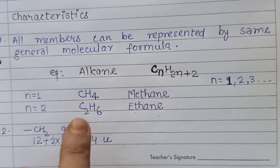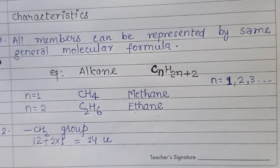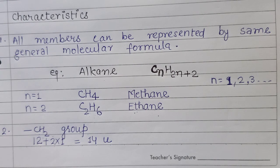All the members of a series possess the same functional group. The chemical properties of all members of a series are similar or almost similar. Regarding physical properties — such as density, melting point, boiling point, and solubility — the members of a homologous series show almost regular variation in ascending or descending order of the series.